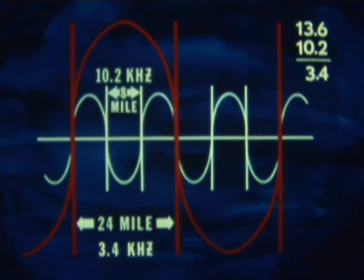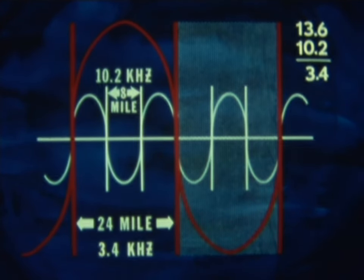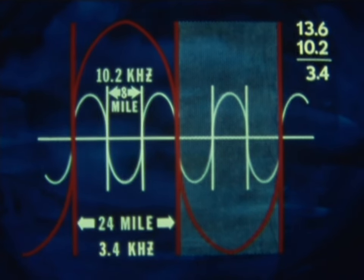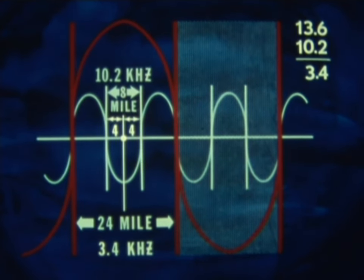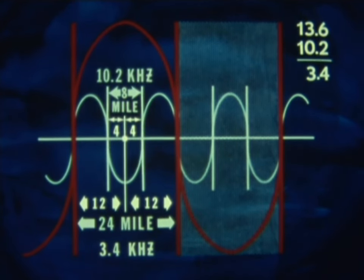This new lane helps resolve lane ambiguity because now we have a lane three times as large in which to place ourselves. And instead of being required to know our position within plus or minus four nautical miles, we now have a radius of 12 miles in which to establish lane count.